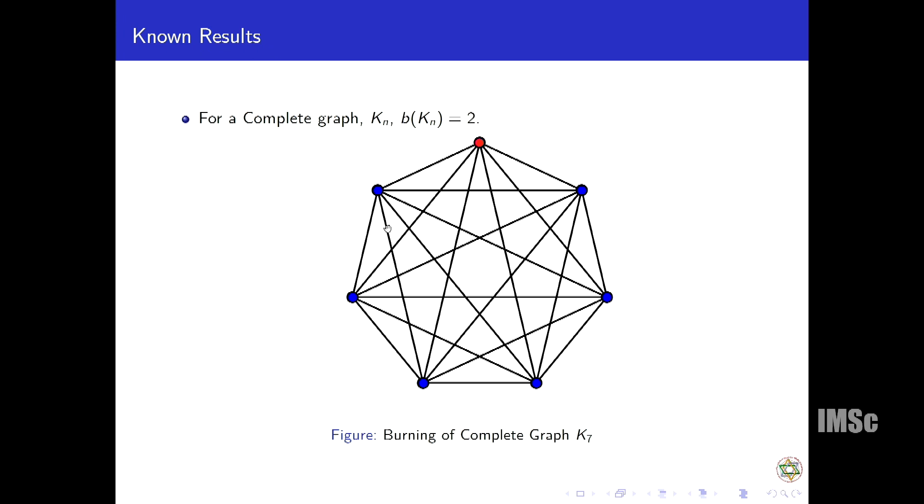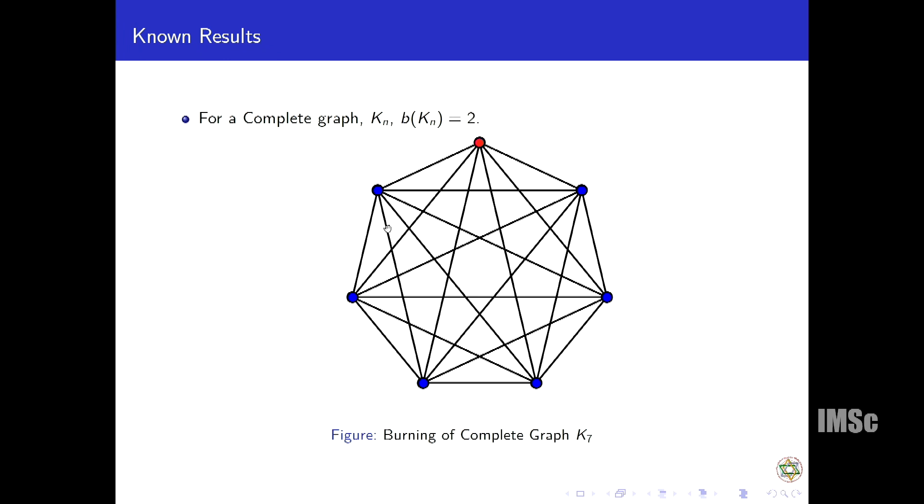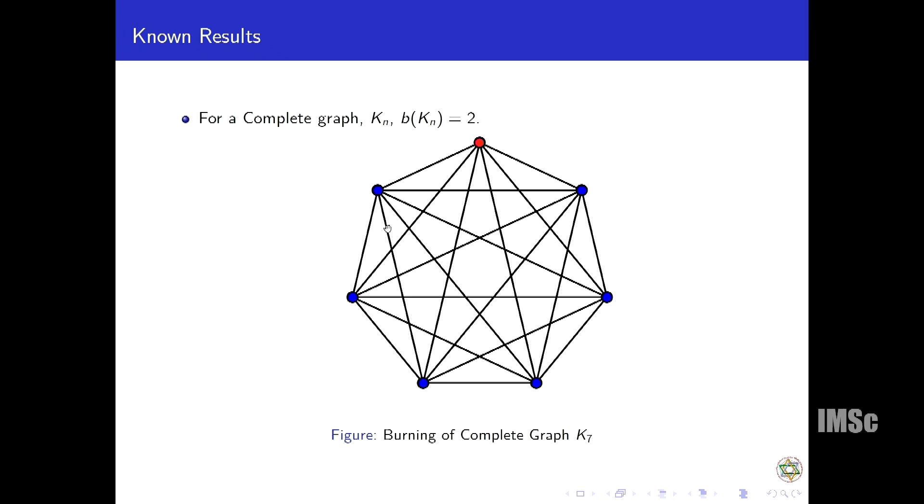As I said, this problem is hard. Let's see some known results. Kn is a complete graph. By complete graph we mean that every vertex is adjacent to all the other vertices. As you can see, all the edges are present there. If we put fire on the red one, then in the next step everyone will get burned because everyone is adjacent to it. For any complete graph the burning number is two. If we take a path, that is a long chain of vertices. Here the burning number is the ceiling of square root n. For this path with five vertices we need at least three steps, whereas here with many vertices we can do it only with two steps.